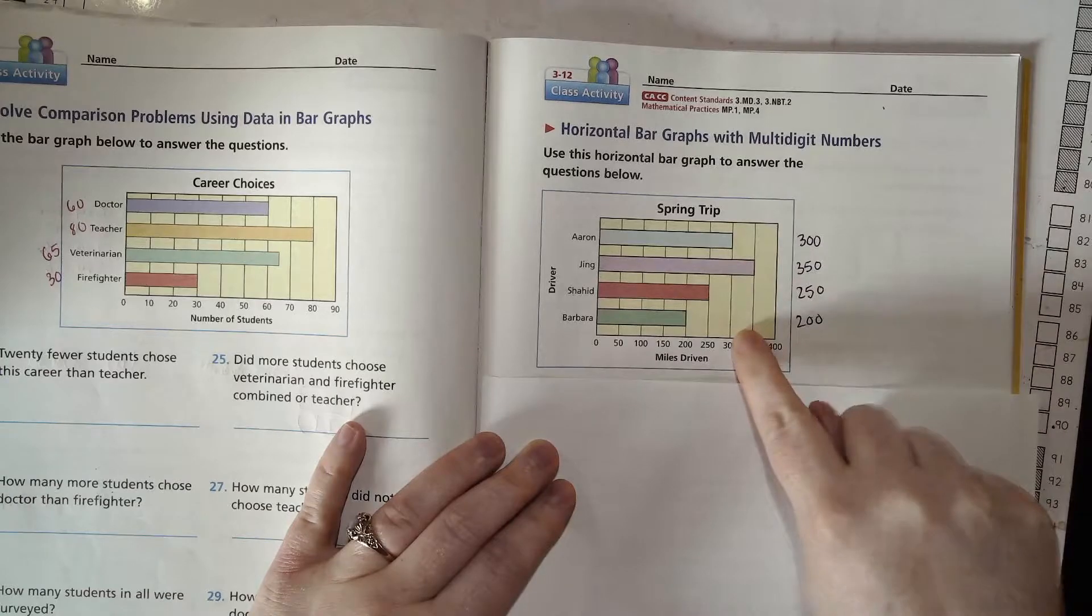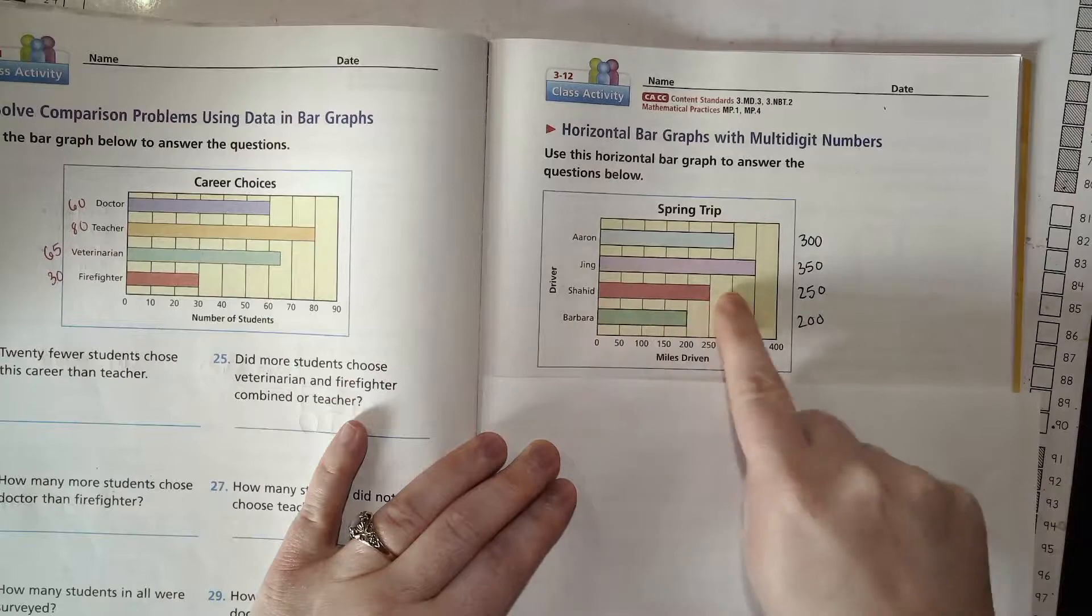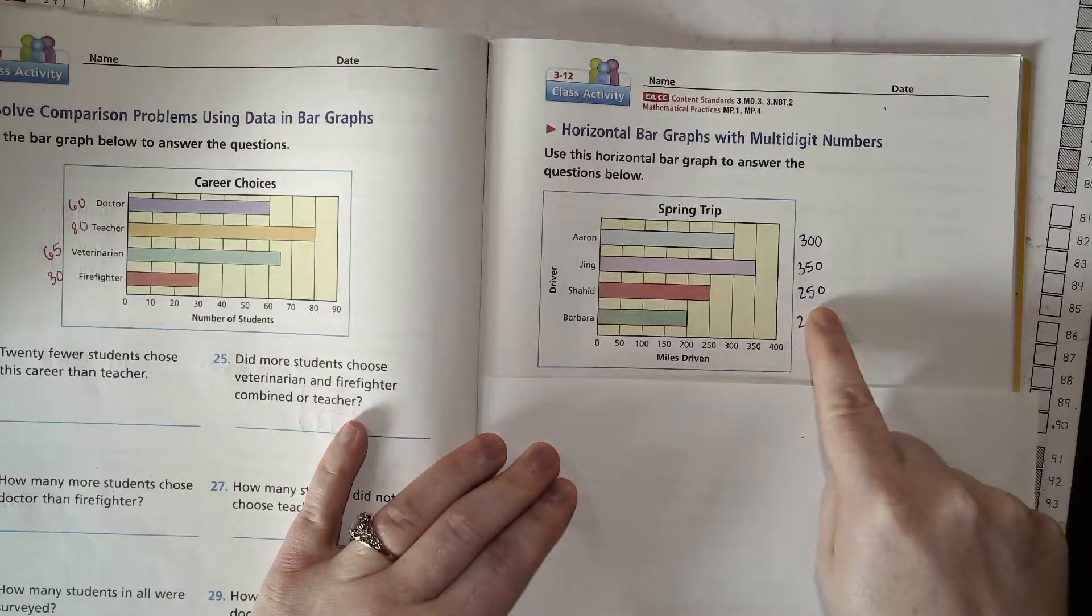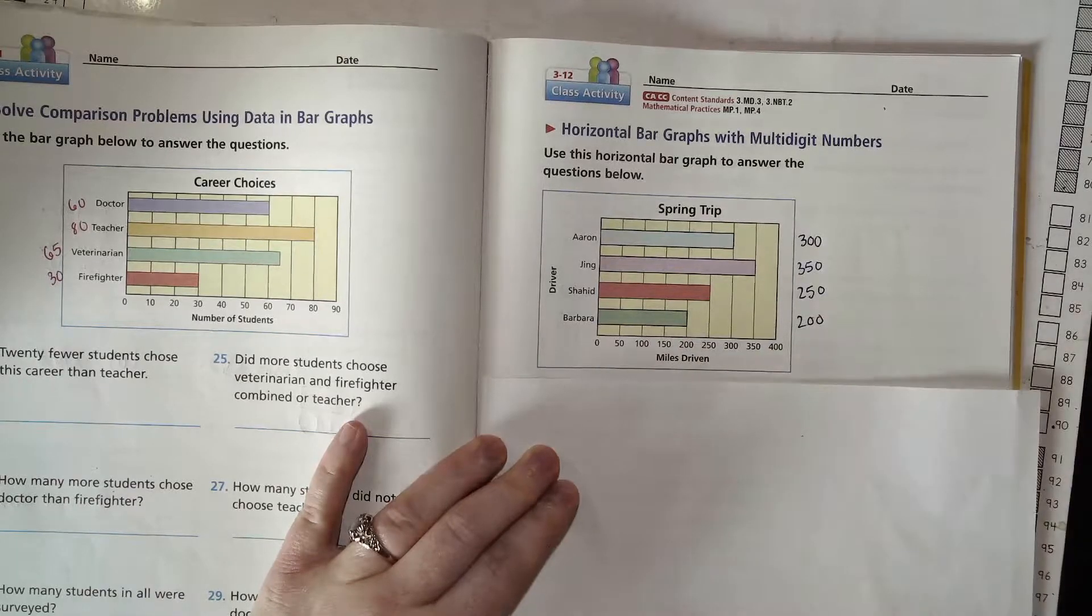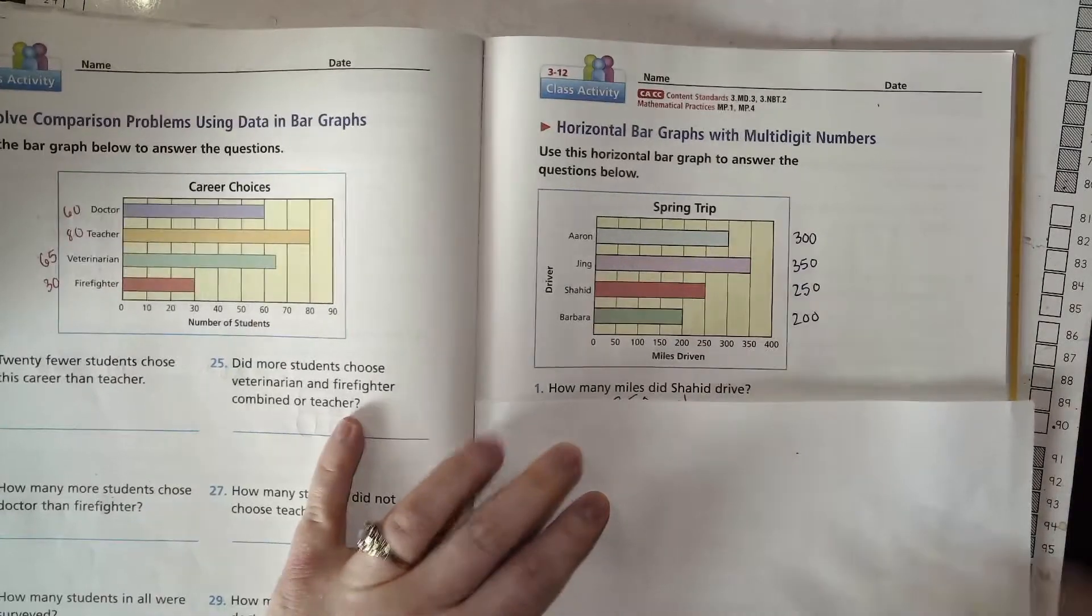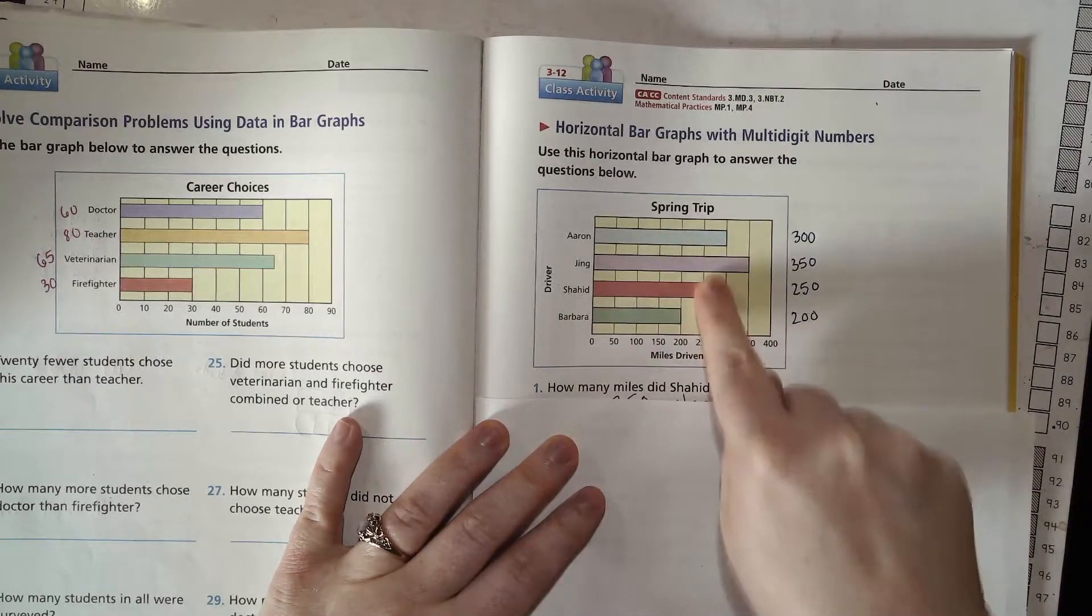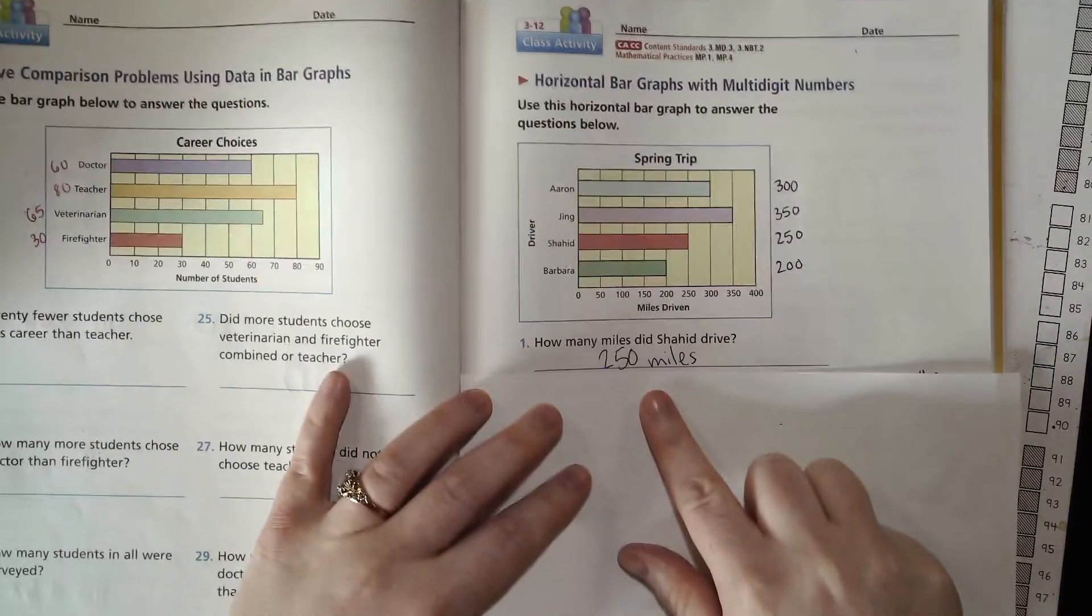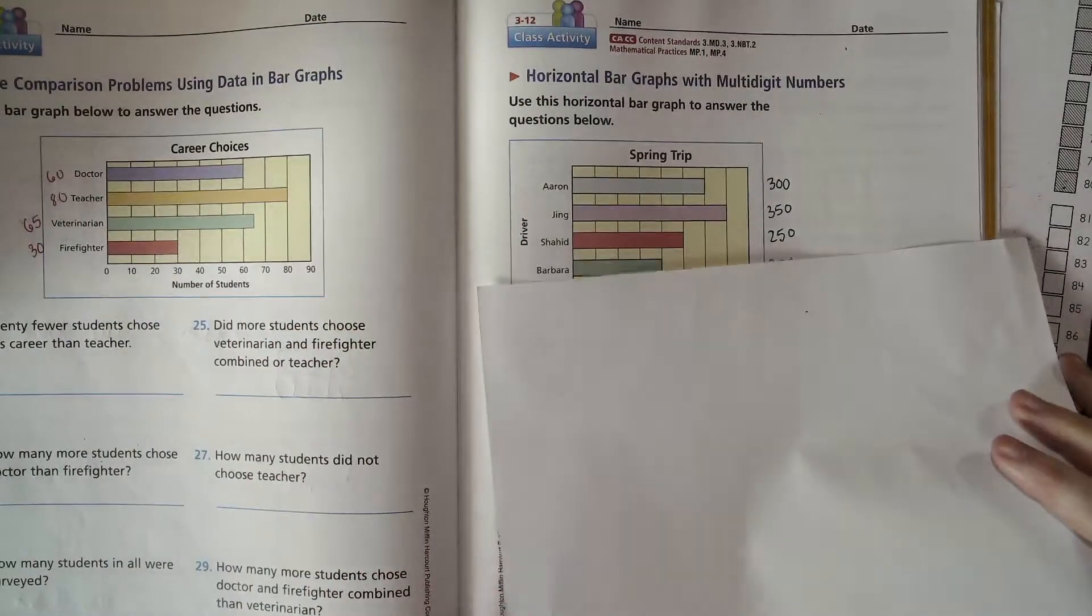Jing did 350, Shaheed did 250, Barbara went up to 200. Okay, our first question is how many miles does Shaheed drive, and you can answer that because we can see here he went to 250, so we just write 250 miles. Now I'm going through the ones for the horizontal bar graph. You're gonna answer very similar questions on your own for vertical.